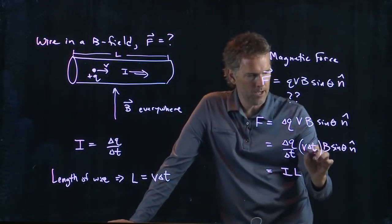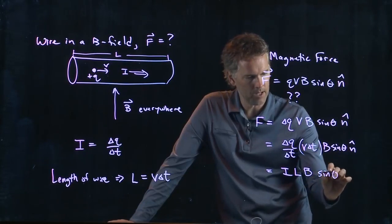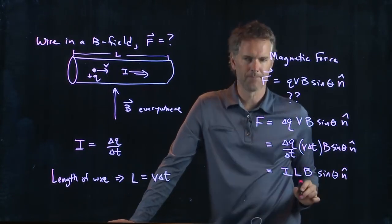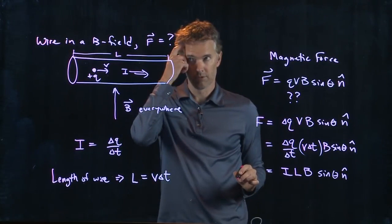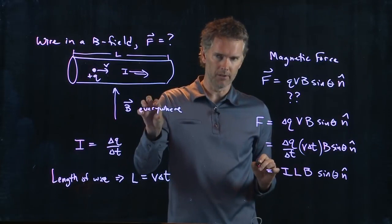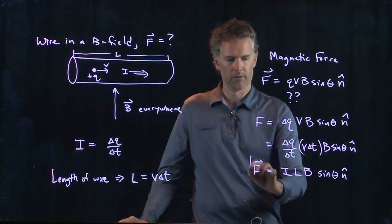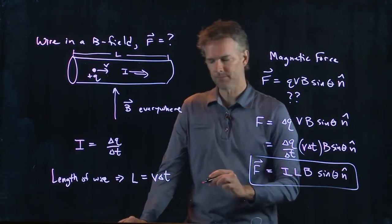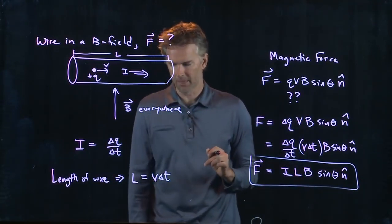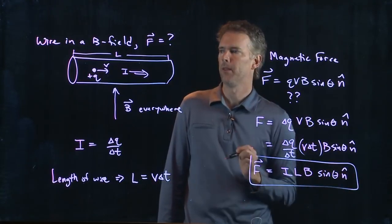We have an I, we have an L, and then we have magnetic field B, and then we have sine theta and hat. So a wire carrying current, if it is sitting in a B field, it will feel a force. It will feel a force given by that: I, L, B, sine theta, and then the N hat again is determined by the right-hand rule.